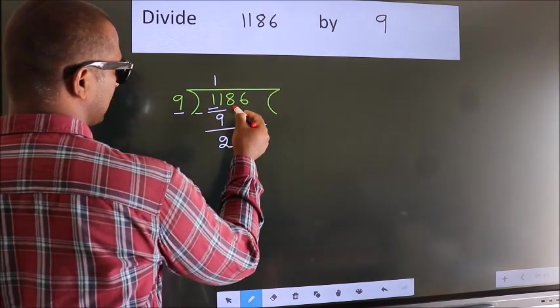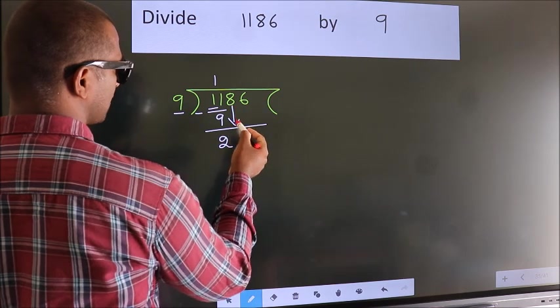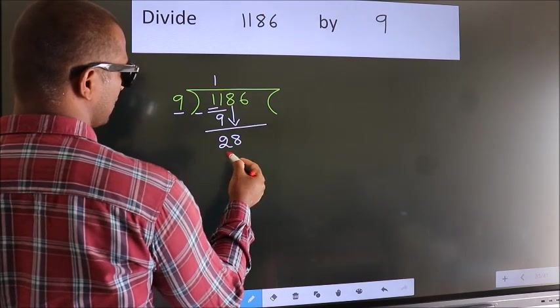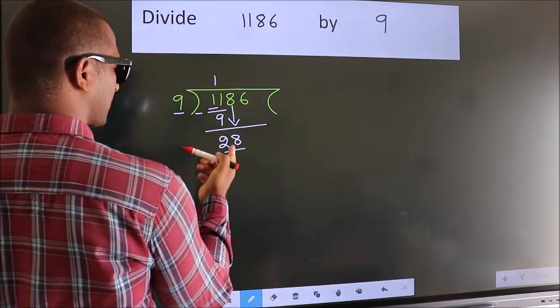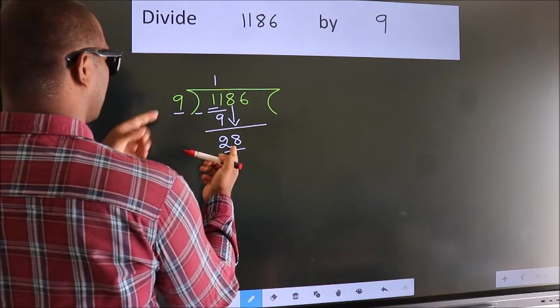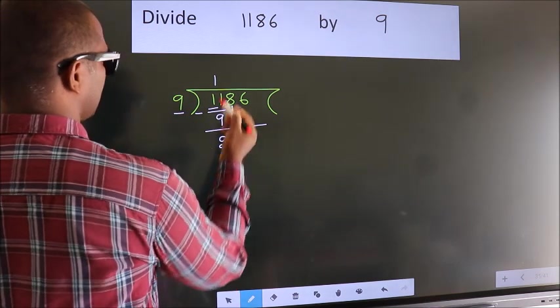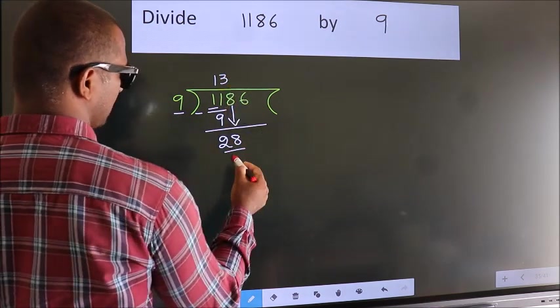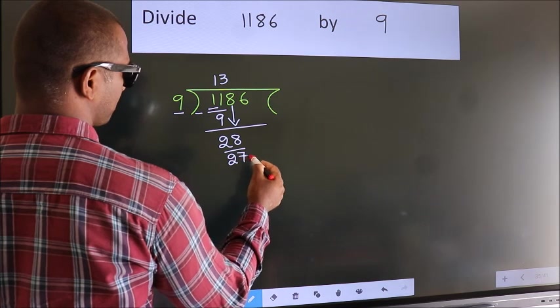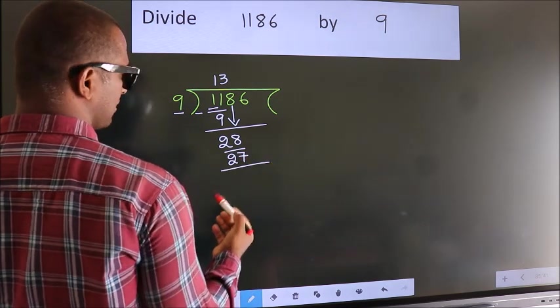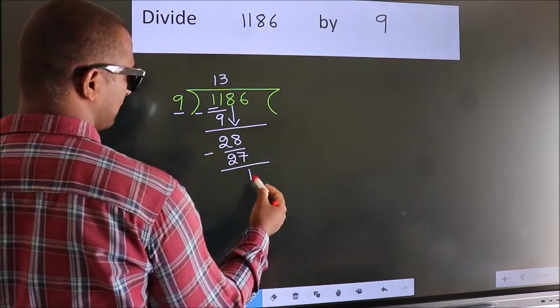After this, bring down the beside number. So 8 down. So 28. A number close to 28 in 9 table is 9 threes 27. Now we subtract. We get 1.